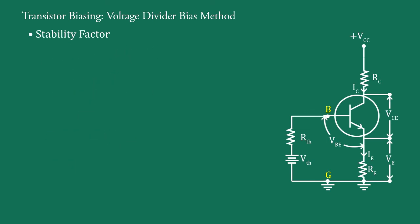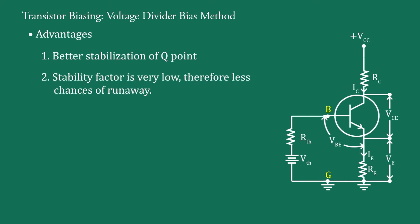Now, advantages and disadvantages. Advantages. This method provides better stabilization of the Q point against variation of temperature because here we obtain S equal to 1. Two, stability factor is very low. Therefore, less chance of thermal runaway.